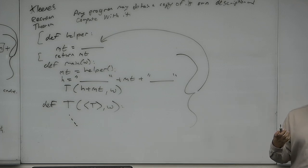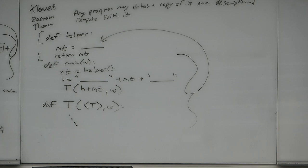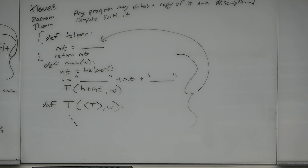You can use the recursion theorem to show that there exists a program to print its own code, its own length, or anything about its code — it obtains a copy of its own description and computes with it. A student asks: is this how viruses work in practice? I have no idea, but it would be fascinating. I wouldn't doubt there's at least one virus that does this. It says at least you can't prevent it — by making the disk read-only, you can't prevent it from accessing its own code.